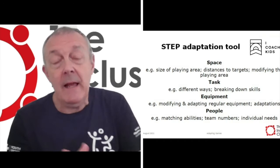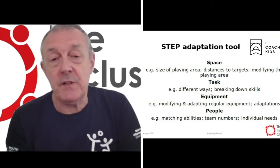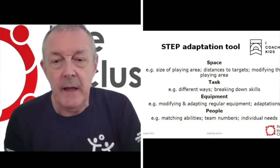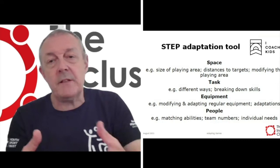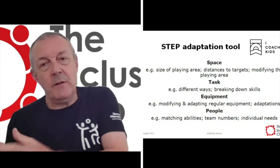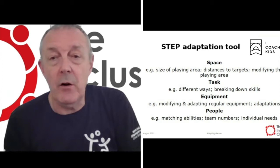The second element is Task — the ways in which we do the activity. These are the different ways in which young people might perform a particular skill or activity, and all those different ways can be modified. We can make the task more complex or we can make it simpler. We can look at ways of breaking down skills in order for a task to be more accessible to a wider range of young people.